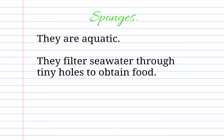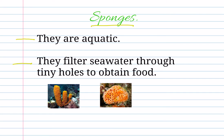The first ones, sponges, are aquatic. They filter seawater through tiny holes to obtain food. And I am giving you some examples. These ones are two different types of sponges. But I am showing you the most famous sponge ever — SpongeBob! You love him, don't you?